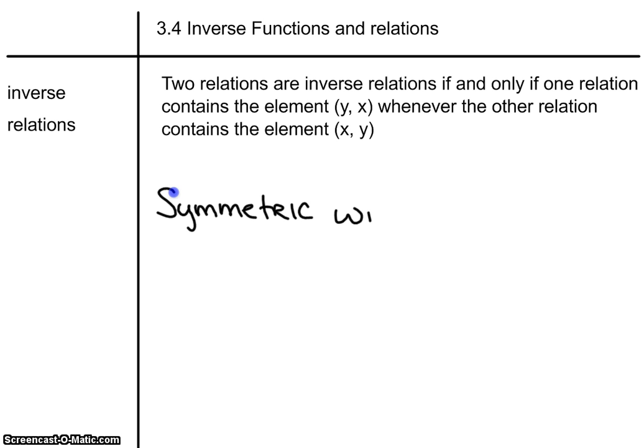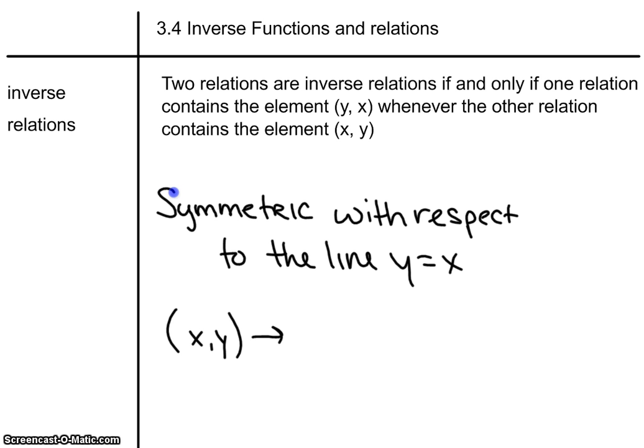would be symmetric with respect then to the line y equals x. Because if we remember that idea, we said that if any point x,y were on a line, then that graph was going to be symmetric to the line y equals x, if and only if the ordered pair y,x was also on there.